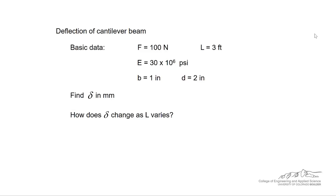So we've got basic data. We're going to apply a force of 100 newtons. We have a modulus of elasticity of this material of 30 times 10 to the 6th psi. And then we're going to choose B equals 1 inch and D equals 2 inch.